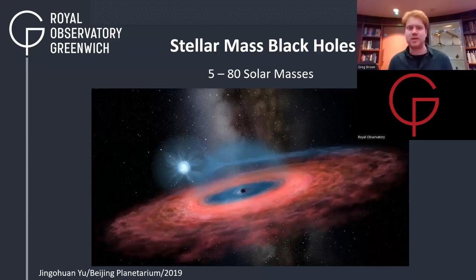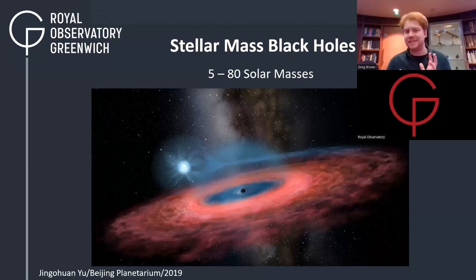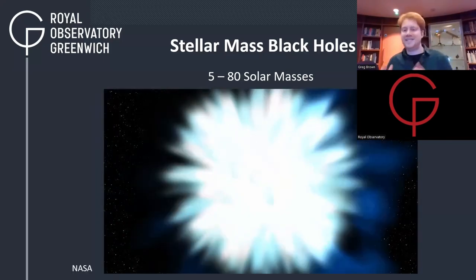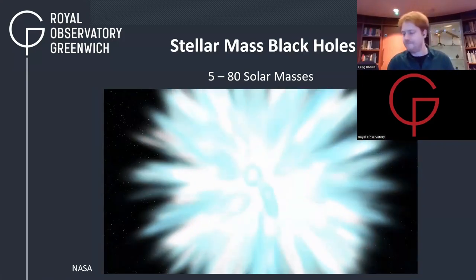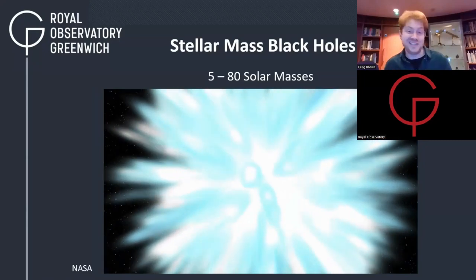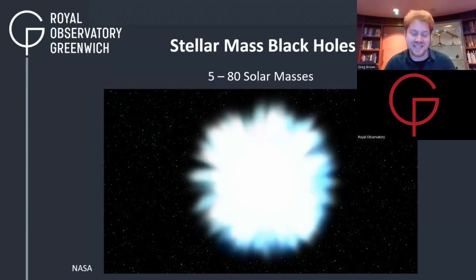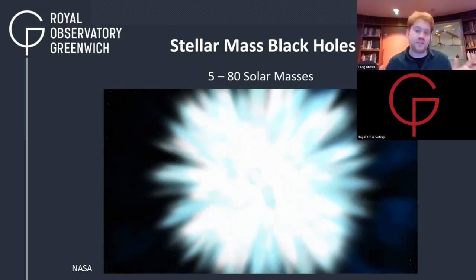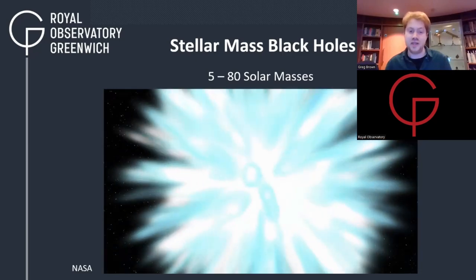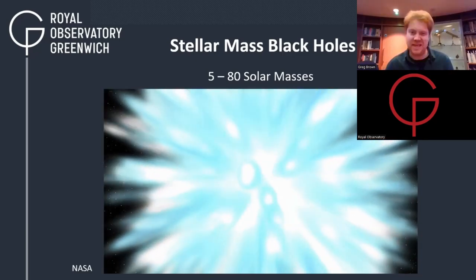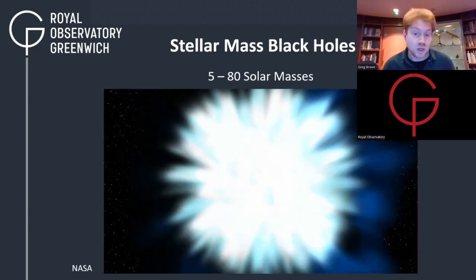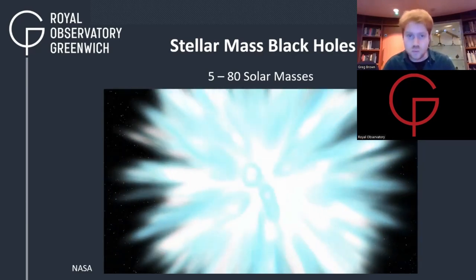The first type of black hole that's actually important is the stellar mass black hole. Stellar mass black holes are somewhere between five and 80 solar masses, sometimes higher, and they are the results of the deaths of the most massive stars in the universe. Stars like our own sun, when they reach the end of their life, will puff up into a red giant, shed their outer layers, and leave behind an Earth-sized object with about half the sun's mass — a white dwarf.